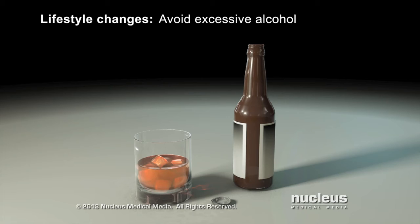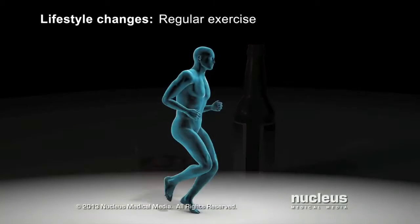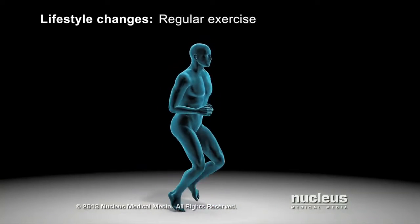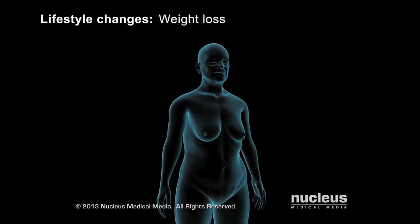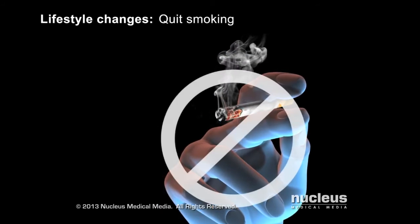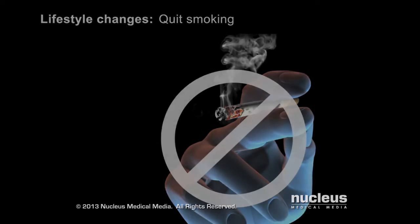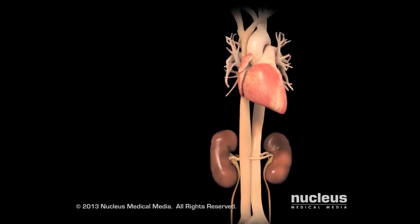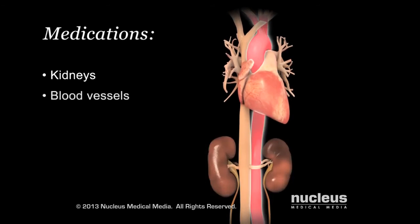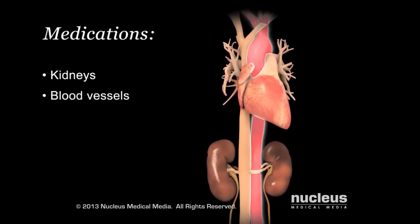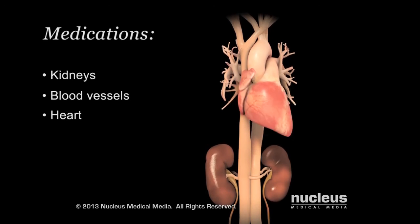Other lifestyle changes that can reduce blood pressure include avoiding excessive alcohol intake, getting regular exercise, losing weight if you are overweight, and quitting smoking. Your doctor may also recommend medications that act on your kidneys, blood vessels, or heart to help reduce your blood pressure.